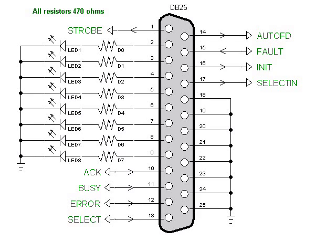Let's look once again at the electrical connections on the DB25 connector as it comes out of the back of your PC. Although it is turned at a 90 degree angle, it should be easy to understand. On pins 2 through 9, I have 8 LEDs connected to ground with 8 470-ohm resistors in between. This is my 8-bit data port. The little piece of software we are going to look at next will use these 8 LEDs to test the port.